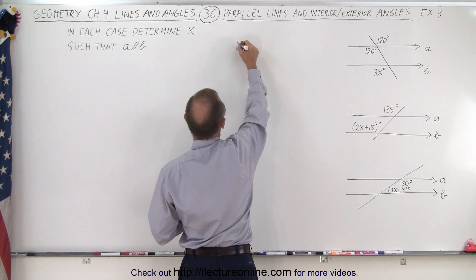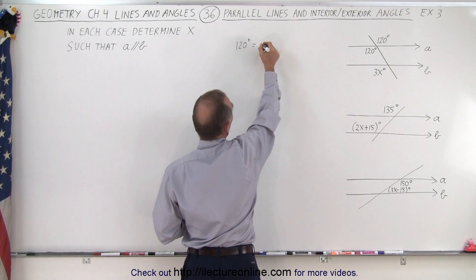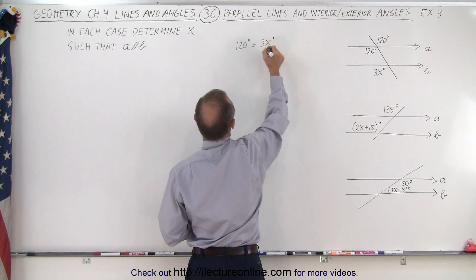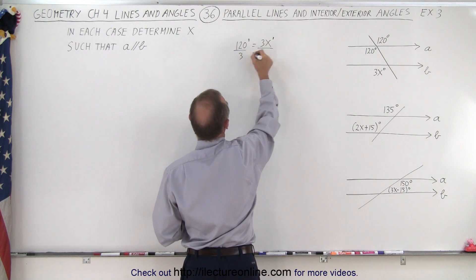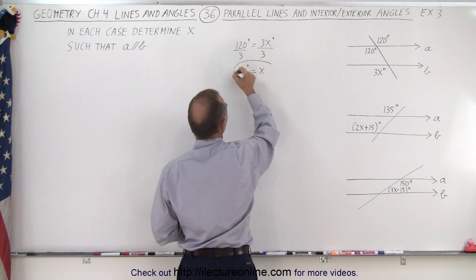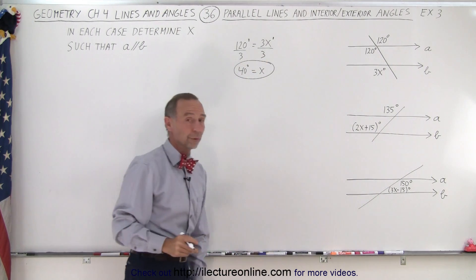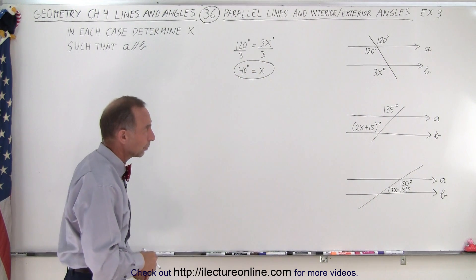So we can say that 120 degrees must equal 3x degrees. We can divide both sides by 3, that means that 40 degrees is equal to x. So in the first case, x must equal 40 degrees and then lines a and b will be parallel.